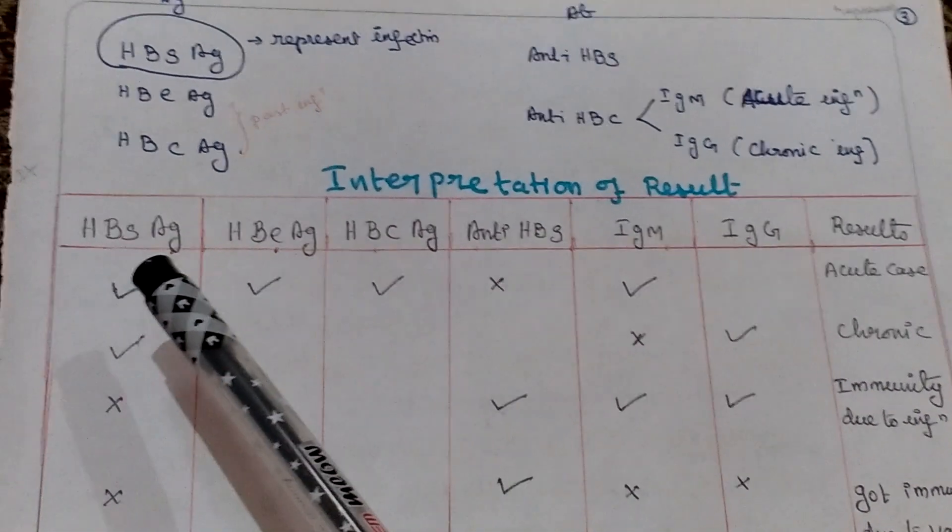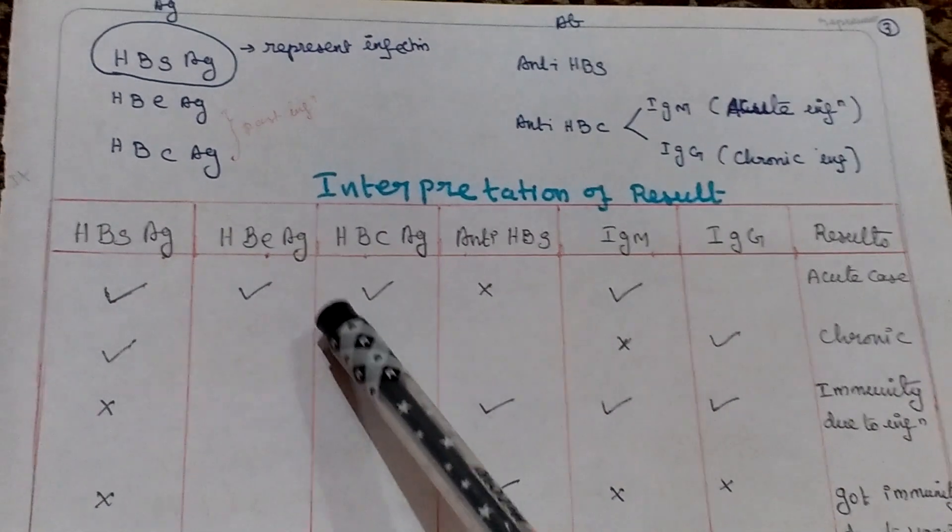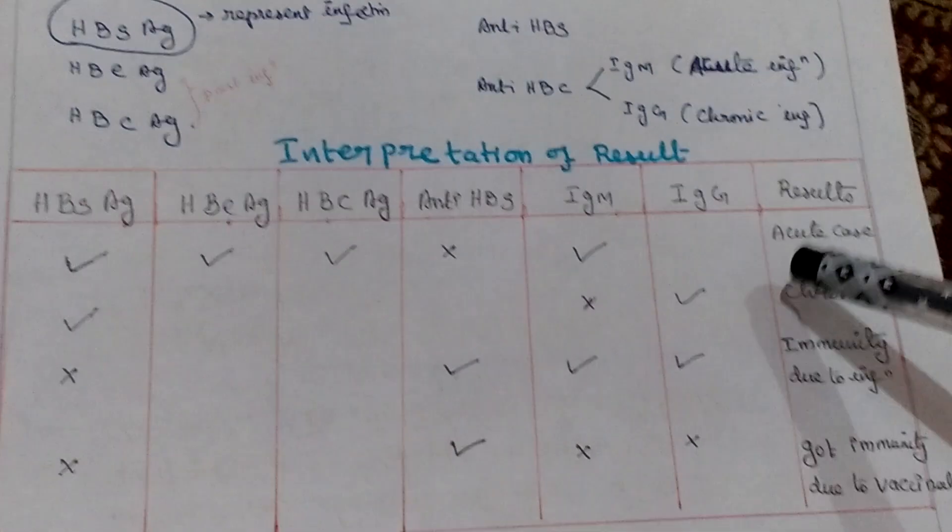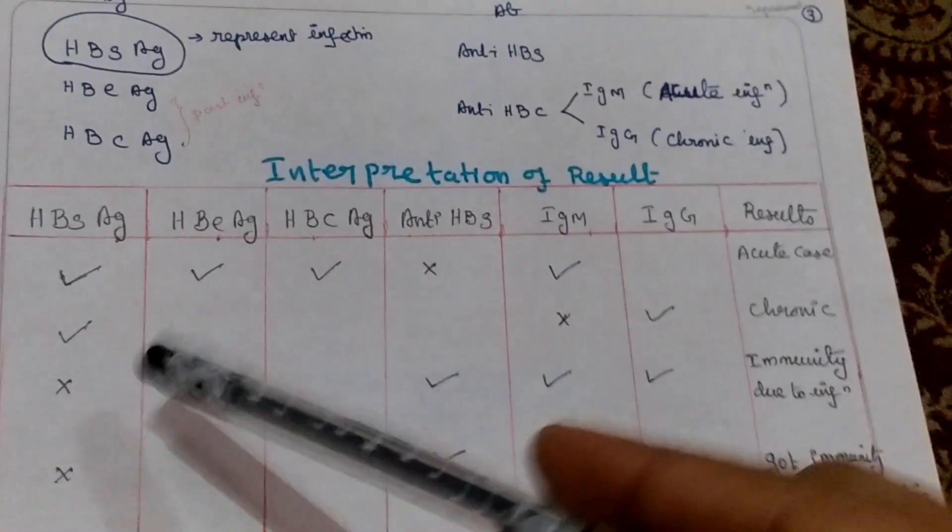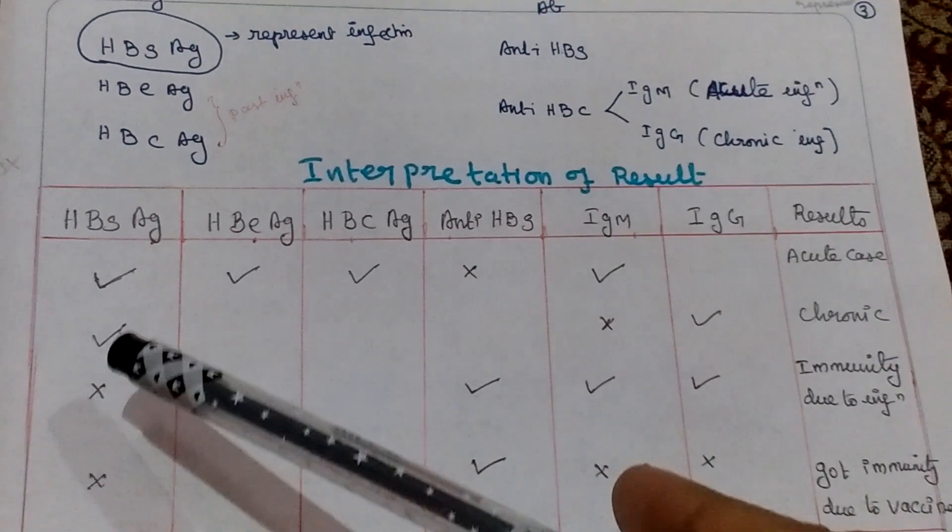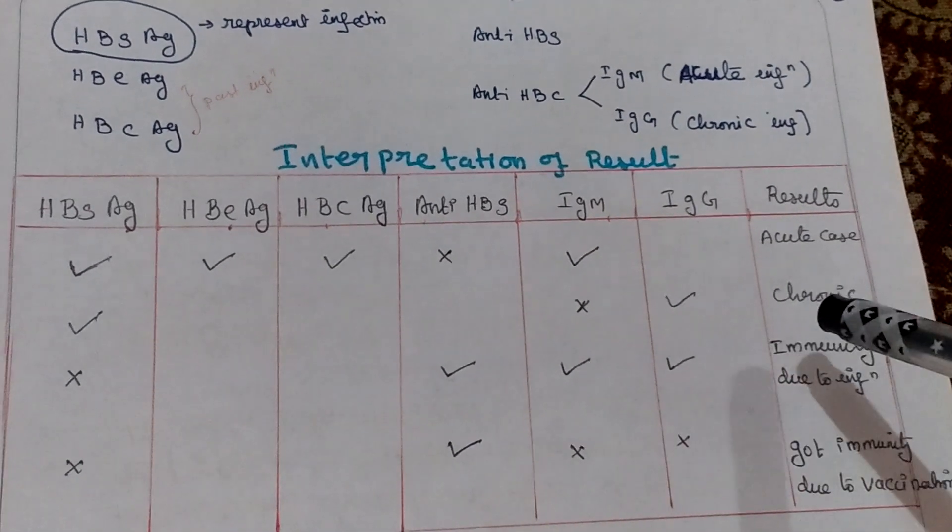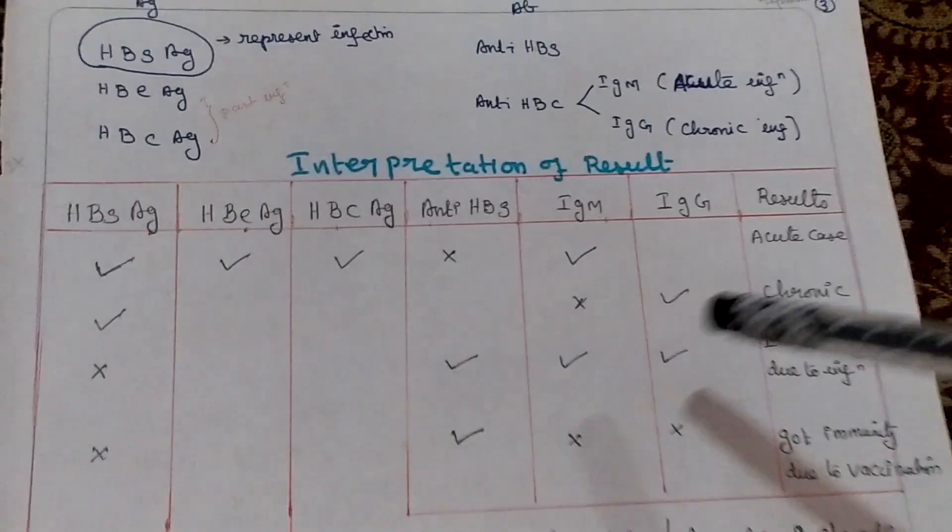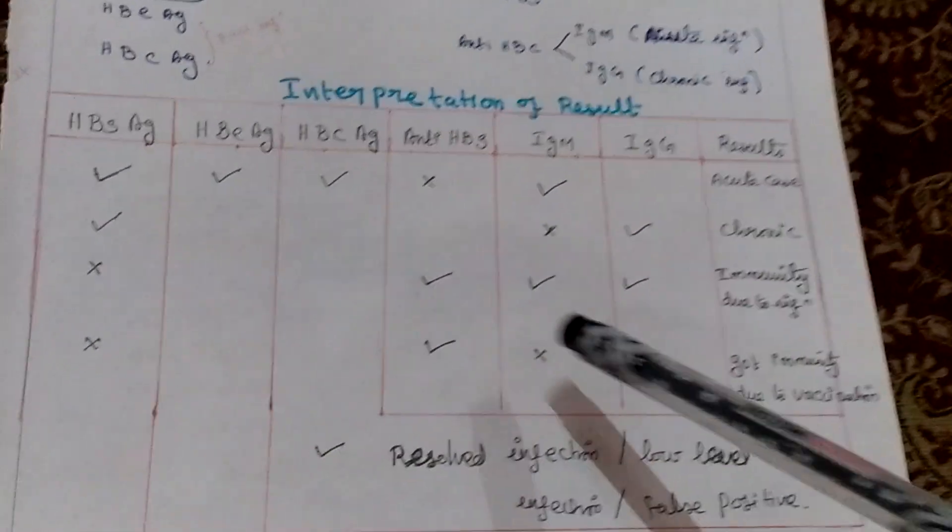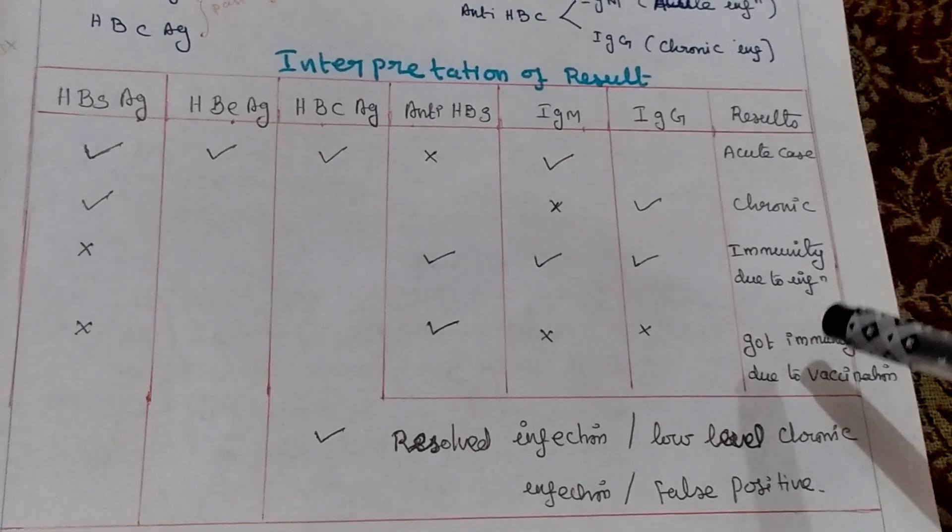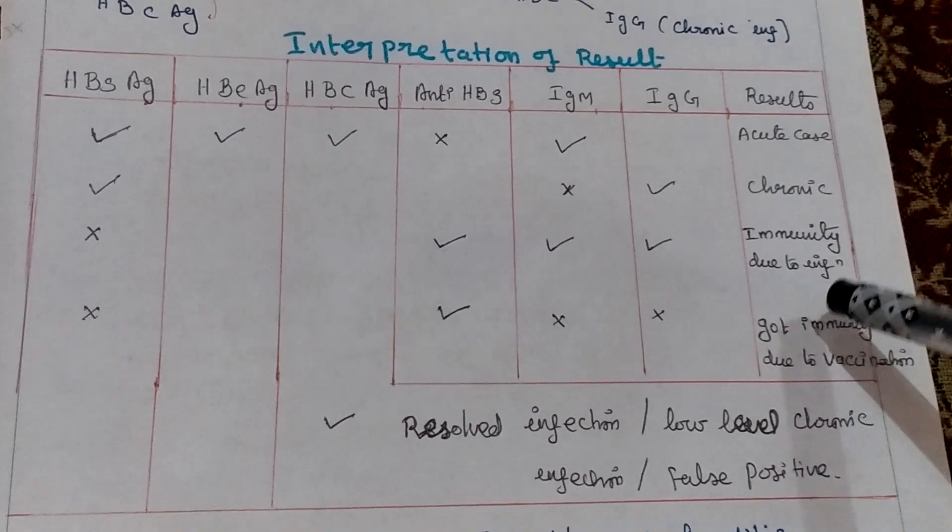If patient has HBsAg in blood sample, with HBeAg and HBcAg present along with IgM antibody, it indicates acute case. If HBsAg is present with IgG antibody, it means chronic infection. If no antigens but all antibodies are present, the result indicates immunity due to infection.